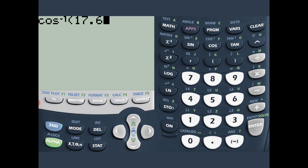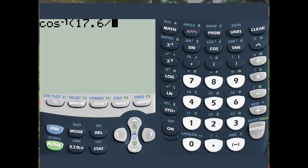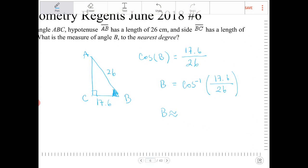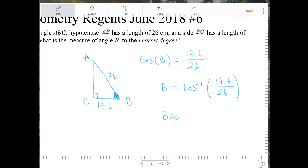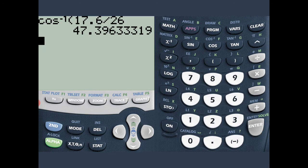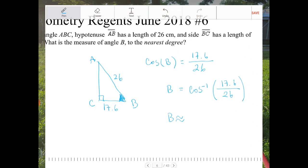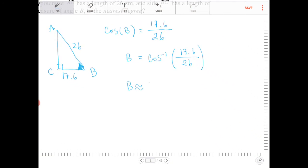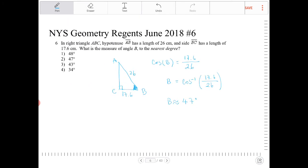17.6 divided by—I forget the number already—17.6 over 26. Rounding to the nearest degree, that would be 47 degrees. That would be option two.